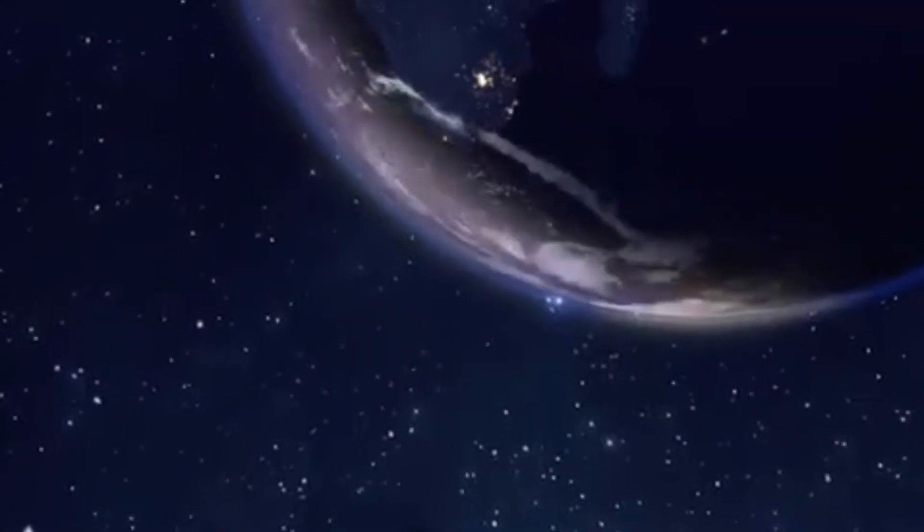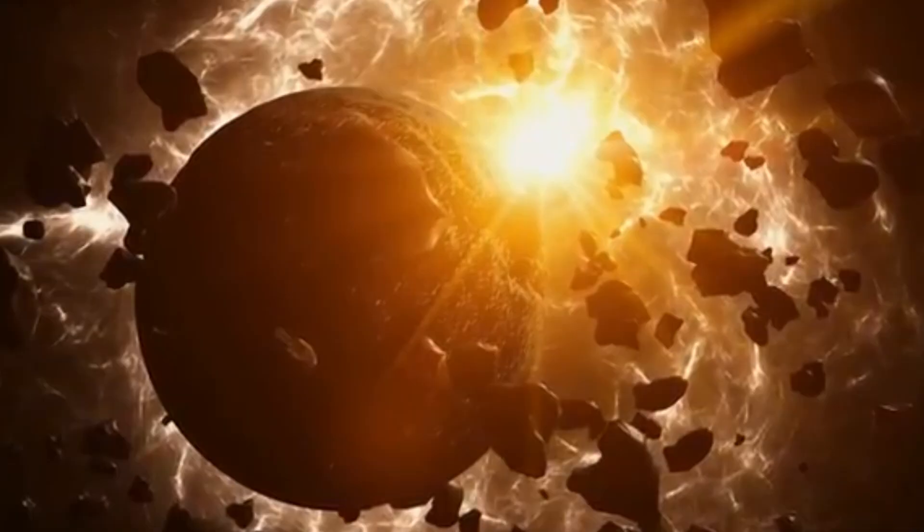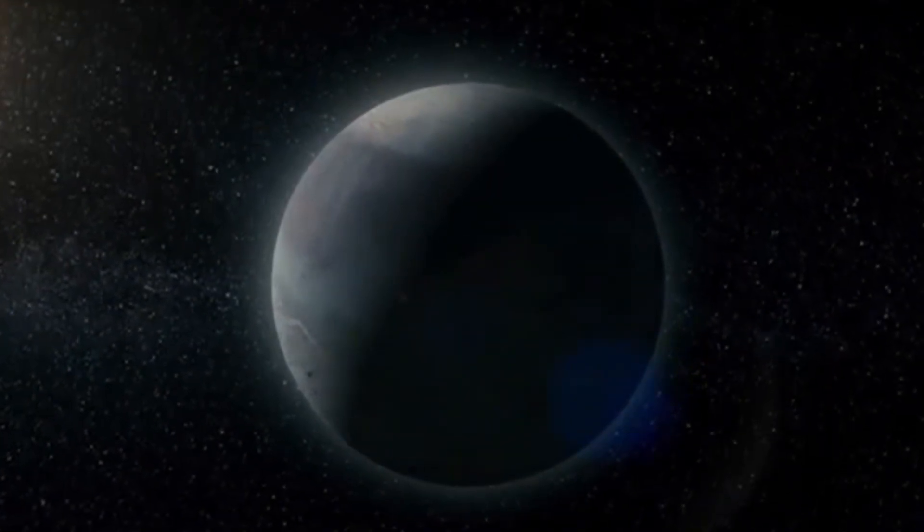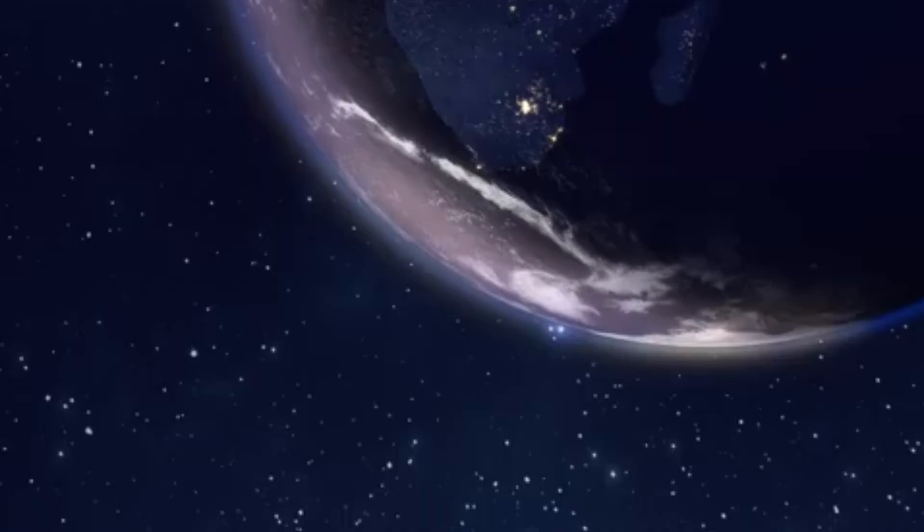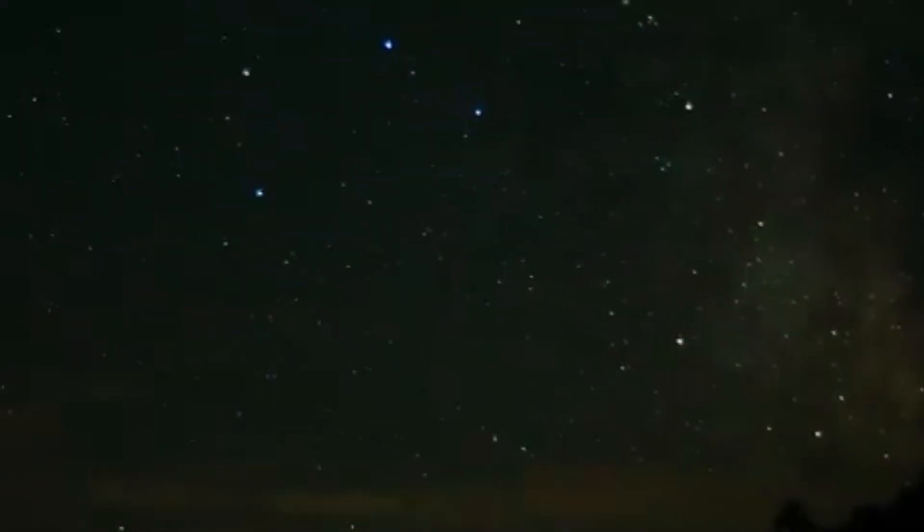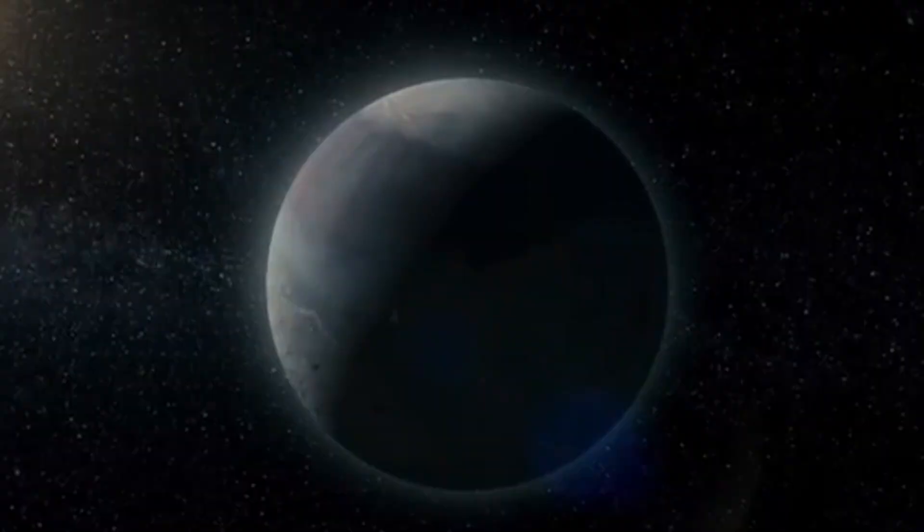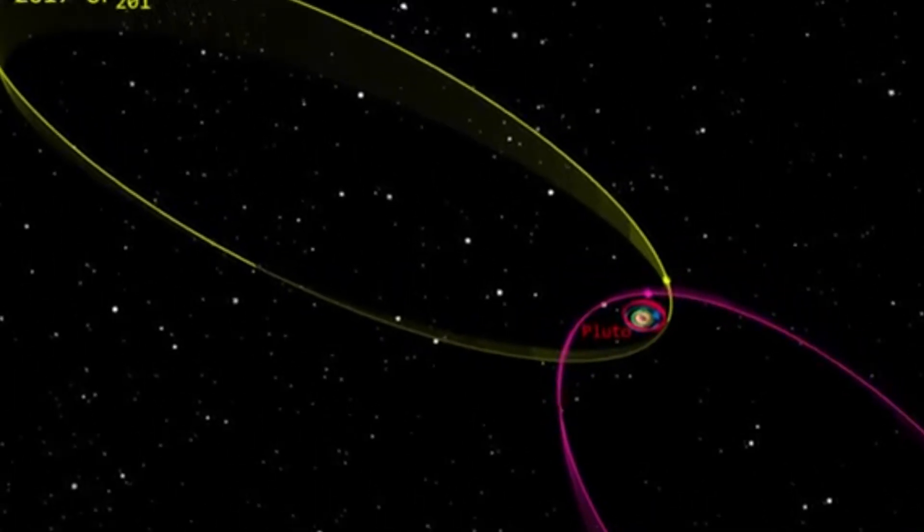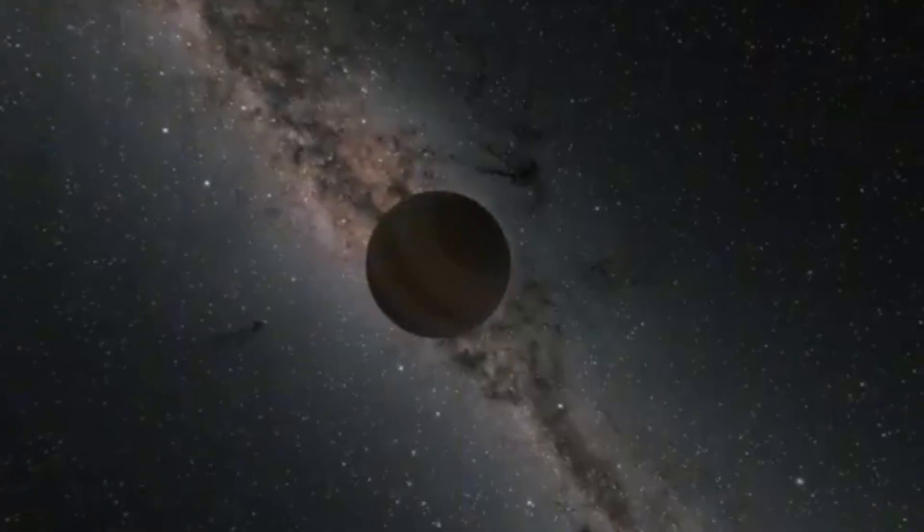But where exactly is Planet 9 actually located at the moment? Well, assuming that it actually exists, experts are unfortunately unable to answer this question with any certainty. However, there is at least a suspicion that the celestial body is currently traveling near its furthest point from the Sun. Whether and when Planet 9 will be found depends not only on its distance, but also on its brightness.